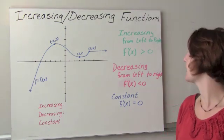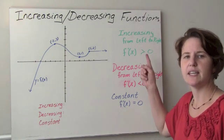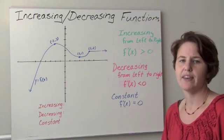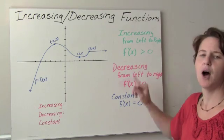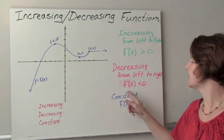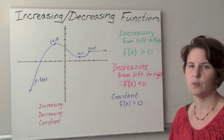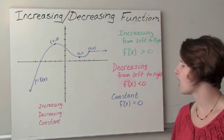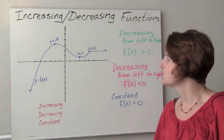Here on the right, we have our rules for increasing. We say that a function is increasing when the derivative is positive, when f prime of x is positive. We say that a function is decreasing when f prime of x is negative, when f prime of x is less than zero, and we say it's constant when f prime of x equals zero.